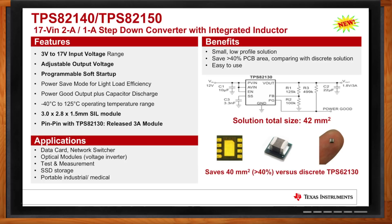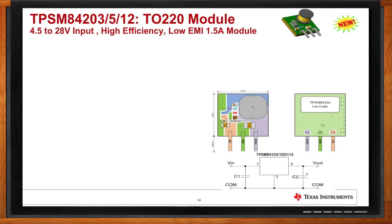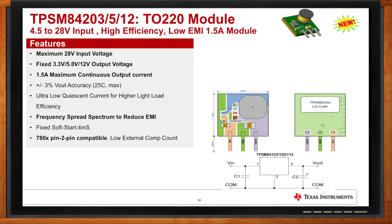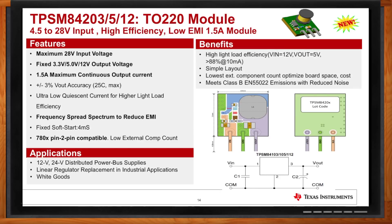The TPS84203 is an interesting device — essentially an LDO replacement. It's a module using a switching regulator in a package with the same pinout as a three-pin TO-220 style LDO. LDOs are easy to use and relatively inexpensive, but they're not efficient. In applications requiring high current with a high input voltage, power dissipation can be a challenge. This module is a three-pin alternative to an LDO, suitable when electronics are being added to consumer-type applications.